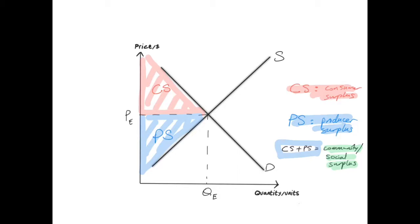Consumer surplus is often shown as the triangle below the demand curve up until the equilibrium price — this red triangle here. Producer surplus is the triangle above the supply curve up until the equilibrium price — this blue triangle here.